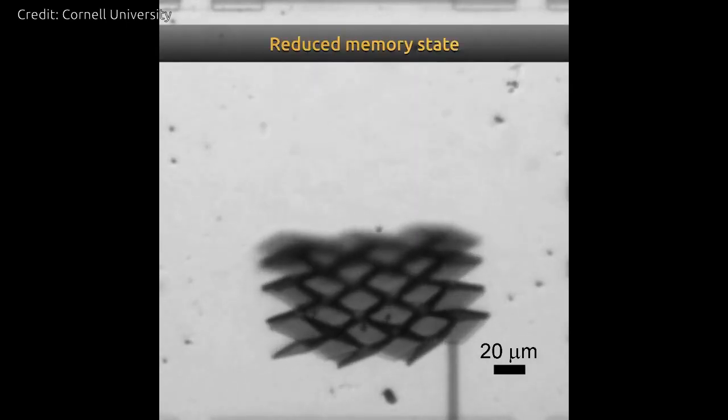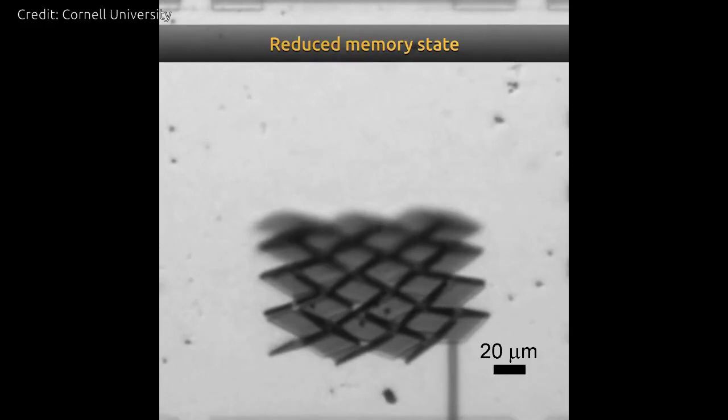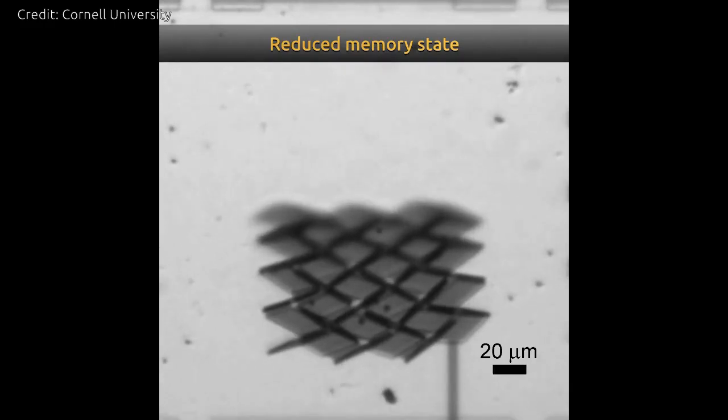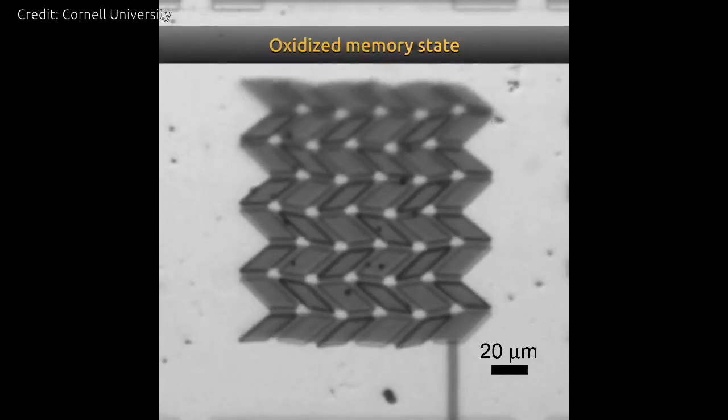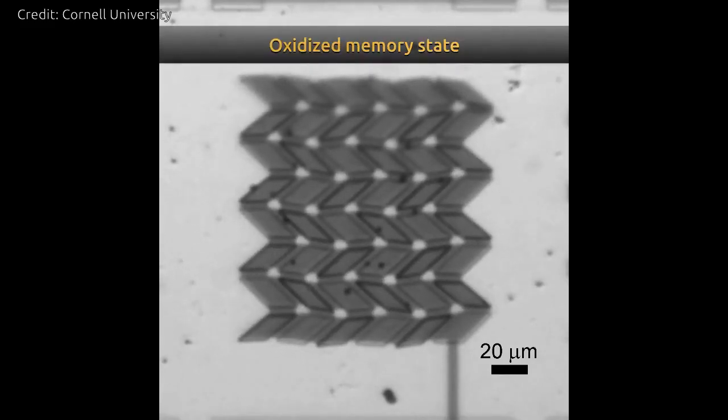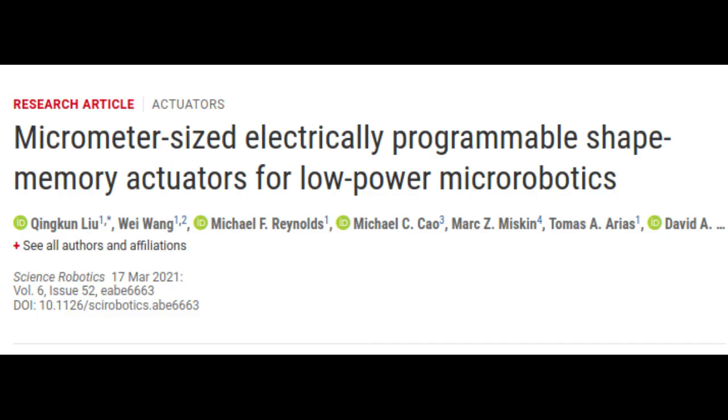The team is currently working to integrate their shape-memory actuators with circuits to make walking robots with foldable legs as well as sheet-like robots that move by undulating forward. These innovations may someday lead to nanoroomba-type robots that can clean bacterial infection from human tissue, micro-factories that can transform manufacturing, and robotic surgical instruments that are 10 times smaller than current devices.